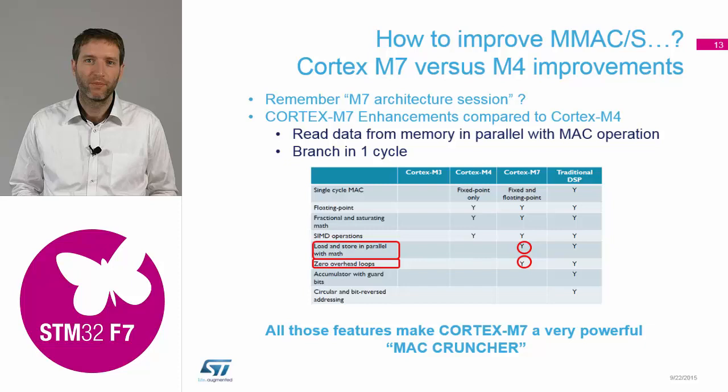That was common for M4 and M7. What is new with M7? This is what we already talked about this morning: we can do load and store in parallel with mathematical operations. This is the dual issue — we can execute two instructions at the same time, giving us much faster loops.